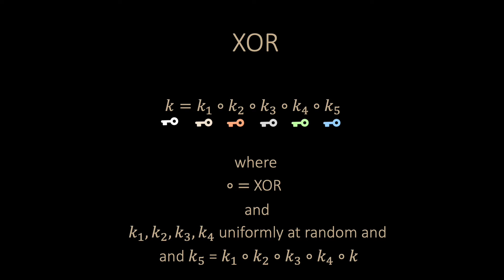One can easily show that if you have any four of the keys, you have no chance of finding the key K, even if you are computationally unbounded. This simple scheme is perfectly secure, but we can only reconstruct the original key if all the keys are present.